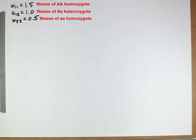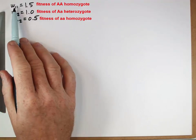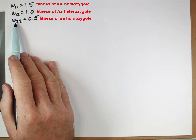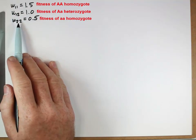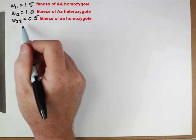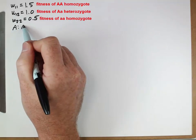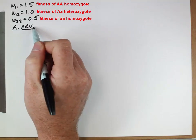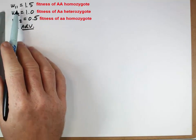So this is a situation in which the capital A allele is obviously better, because those homozygotes do better than homozygotes for the lowercase a allele. And actually we can think of the capital A allele as advantageous, because individuals with it do better than individuals without.